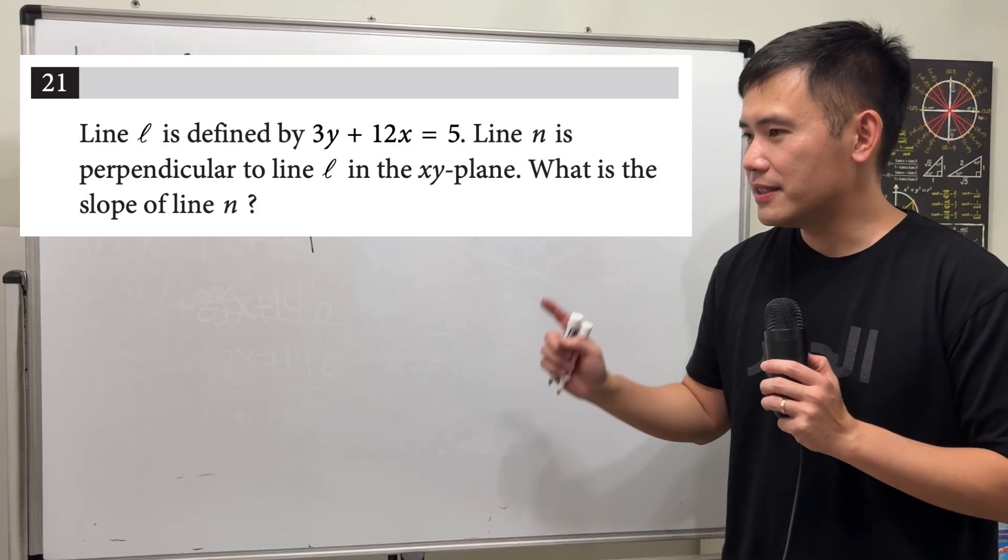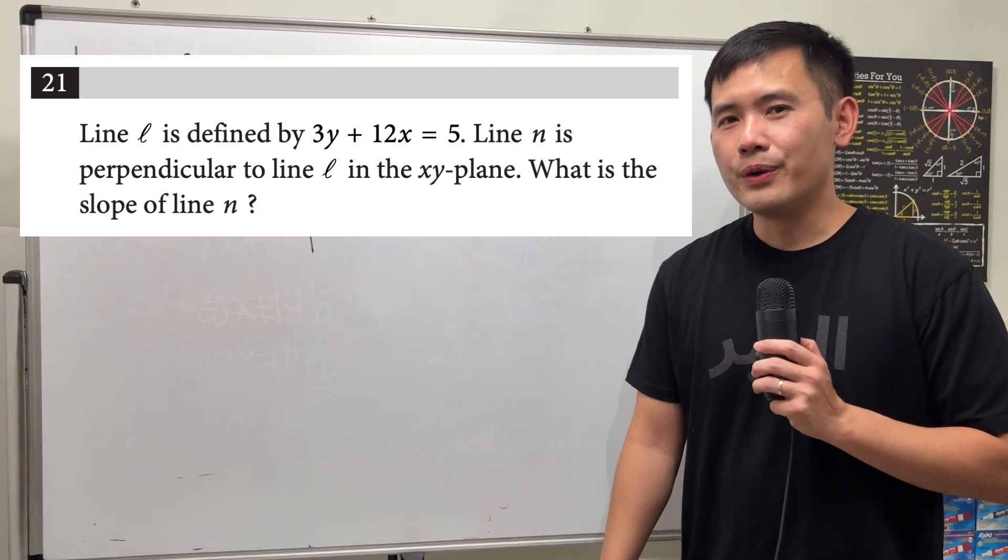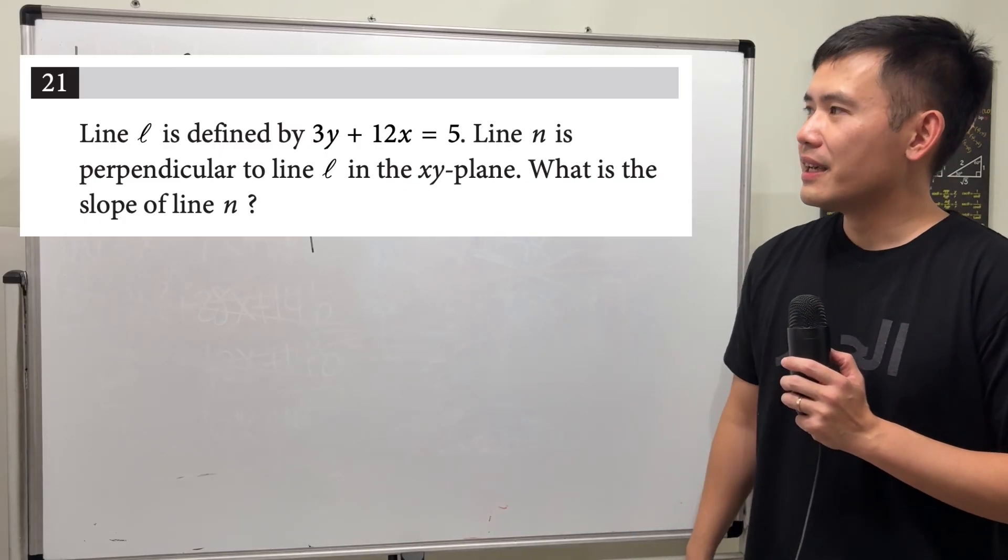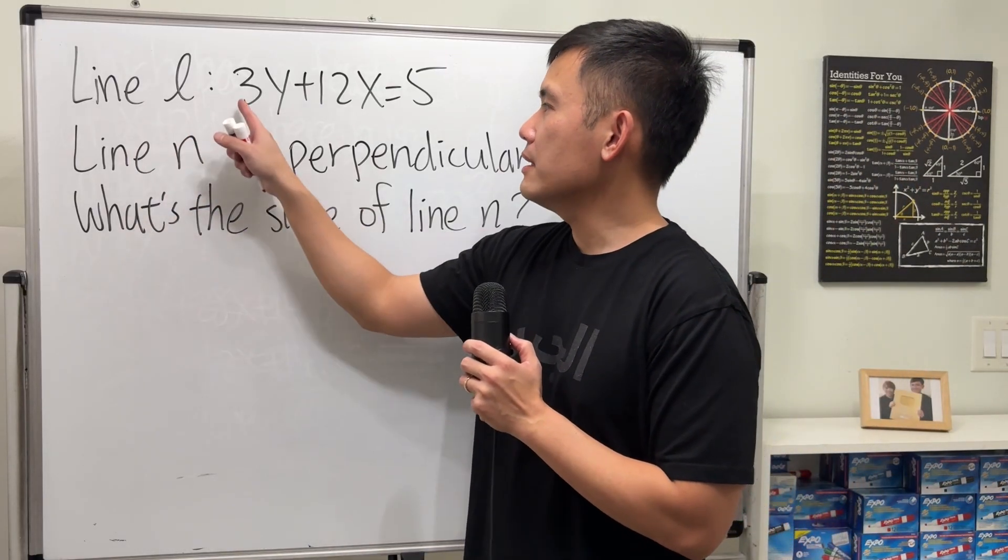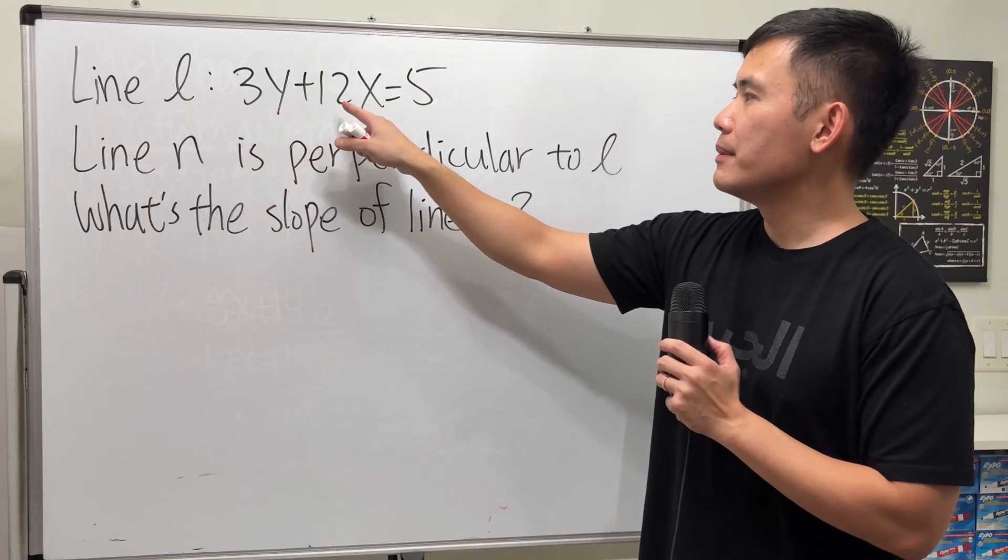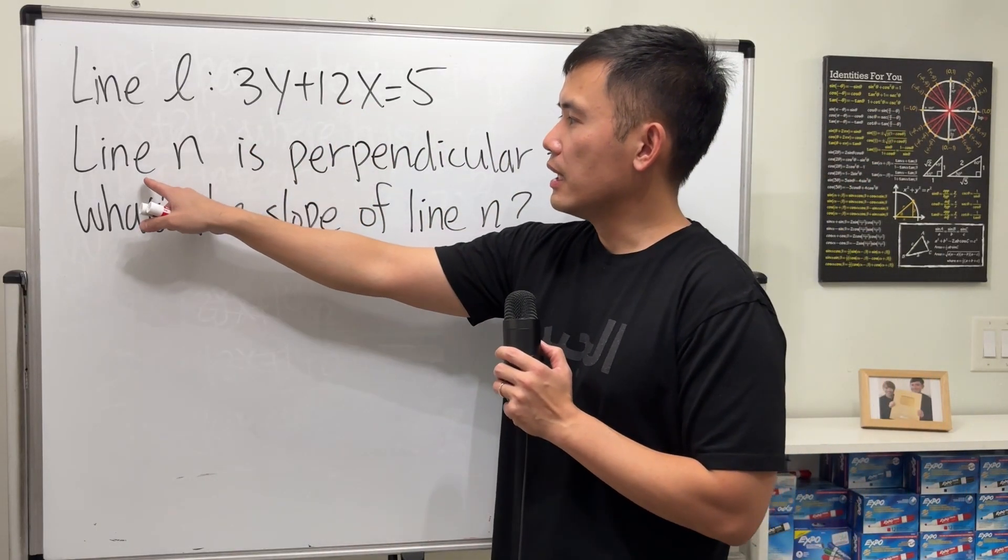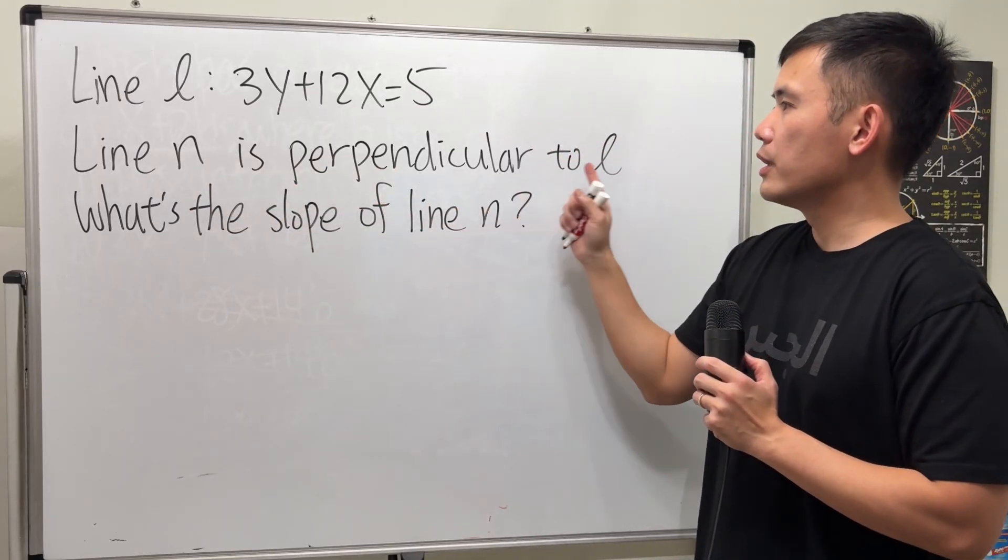Okay, this question tests you to see if you remember your basic algebra, especially with lines and slopes. Here's the deal. We are given the line L: 3y plus 12x is equal to 5. And right here,